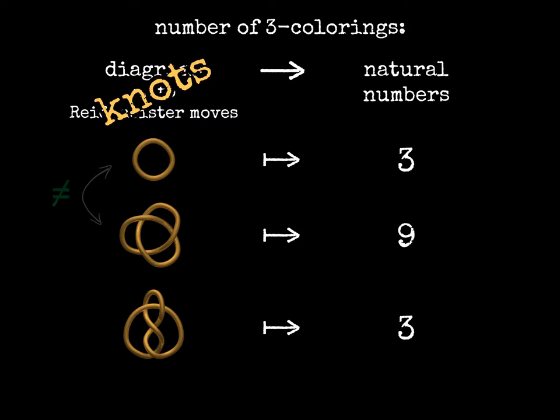We can use this number to tell some knots apart. In particular, the trefoil is different from the unknot, that is it is truly knotted. There are distinct knots with the same number of three-colorings. To prove that these knots are distinct we need other methods.